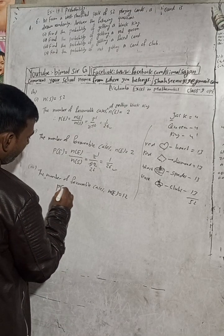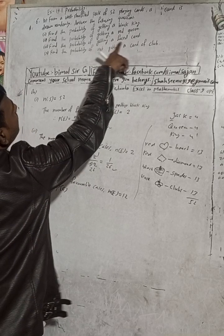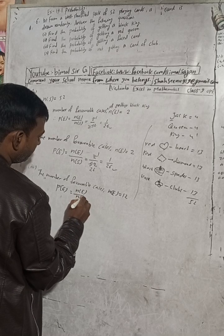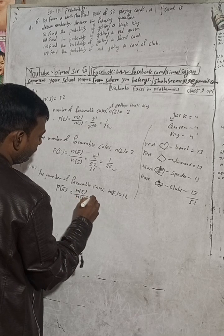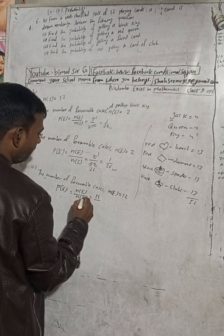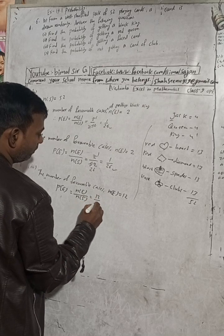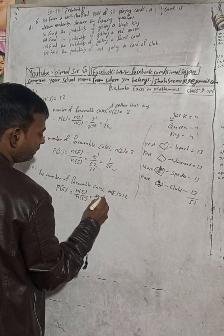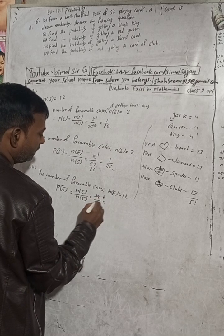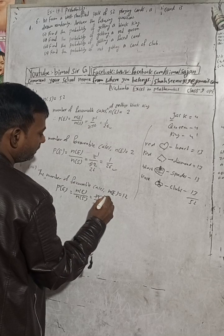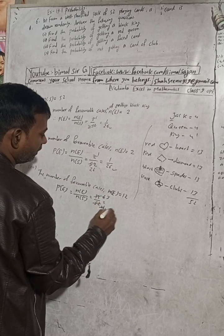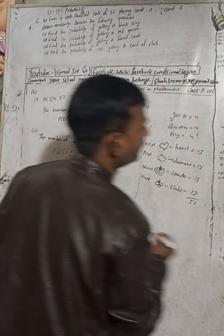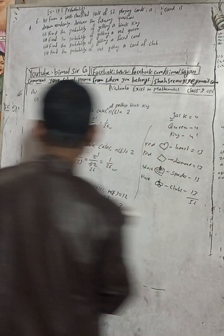n(E) = 12. P(E) = n(E) / n(S) = 12/52. Simplifying: divide both by 4 — 12/52 = 3/13. So the probability of getting a face card is 3/13.